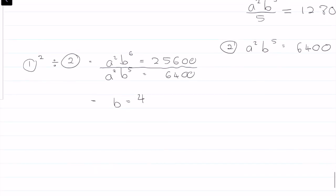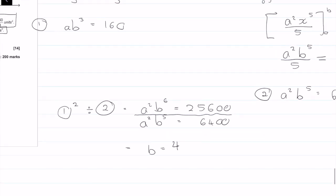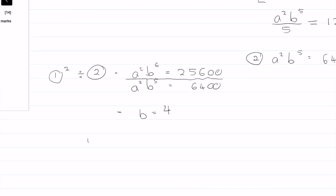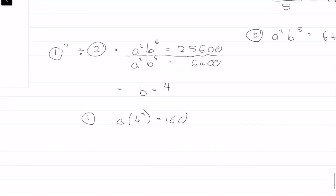So b is equal to 4. Now I just need to pick one of my equations. Let's pick equation 1 and substitute b in. So we get a times 4 cubed equals 160, therefore a equals 160 divided by 4 cubed, which is 5 over 2. So those are our answers.